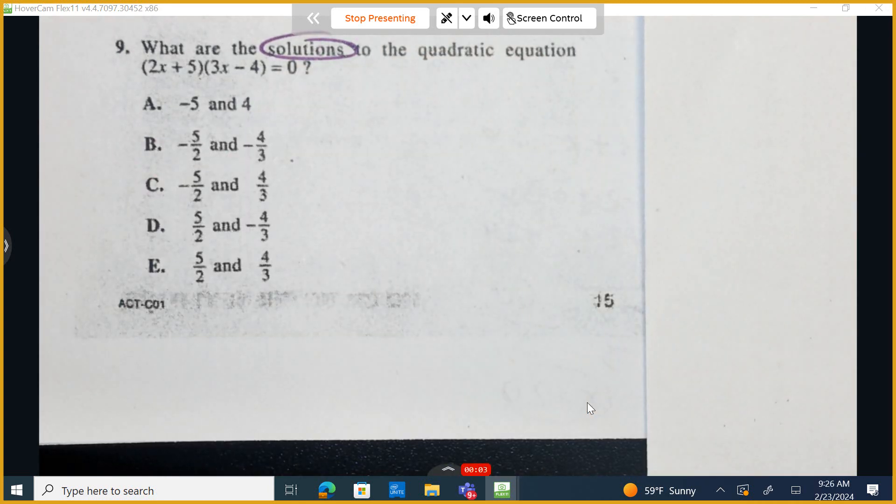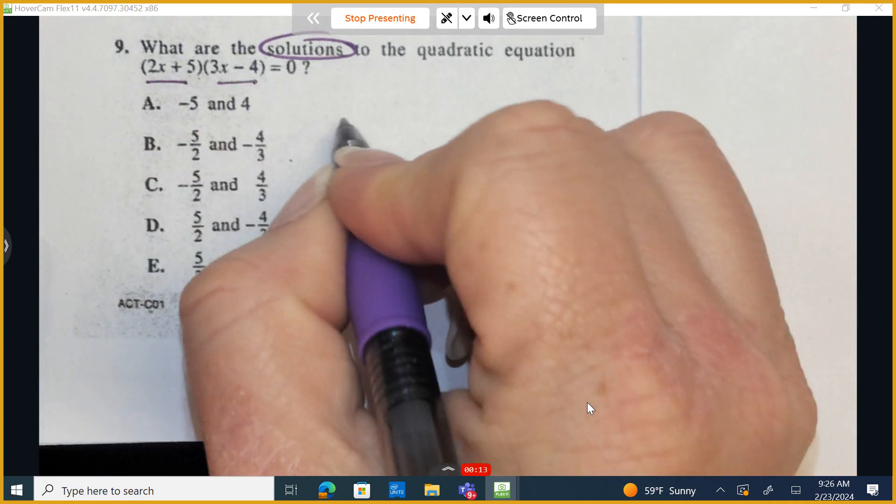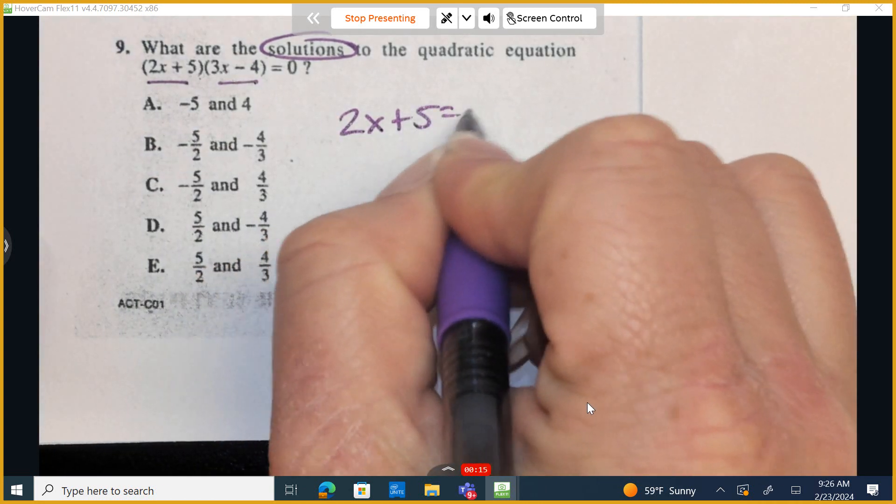Circle the word solutions! When we're trying to find the solutions, this is already in factored form. So they've already factored it for us to make life really easy. And now we're going to take each one of these quantities, set it equal to 0, and solve.